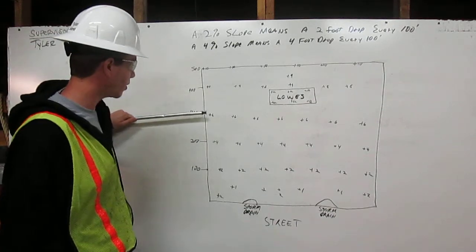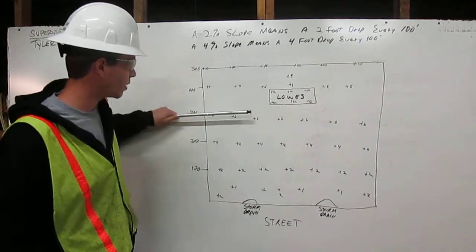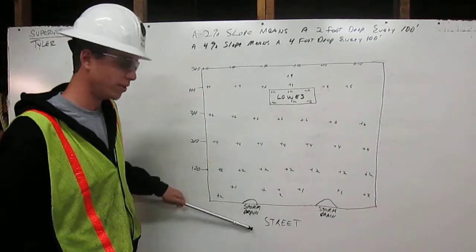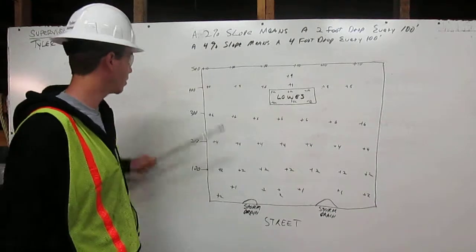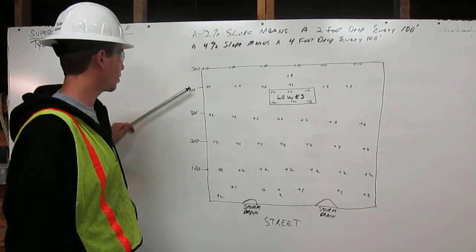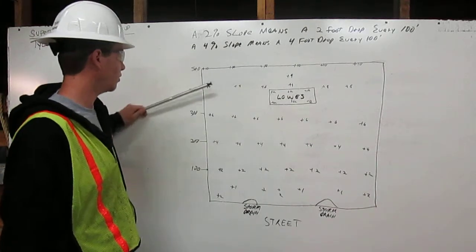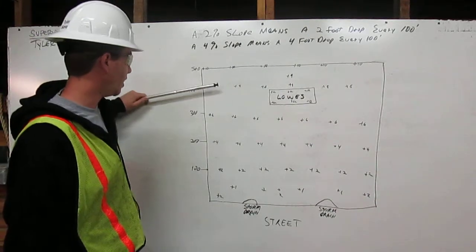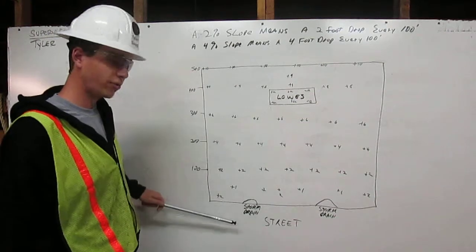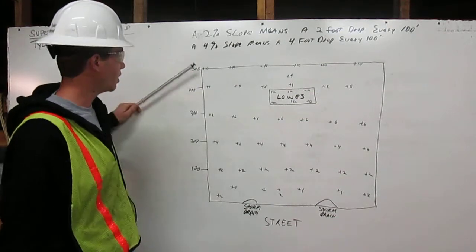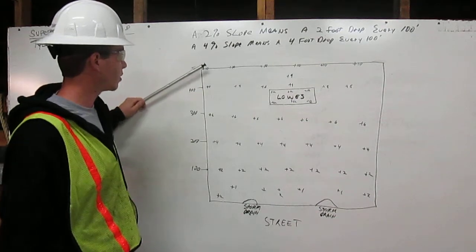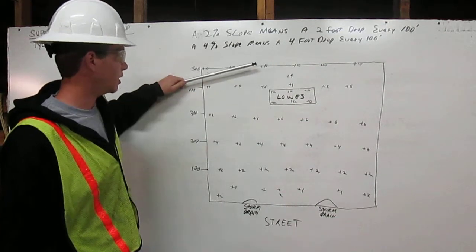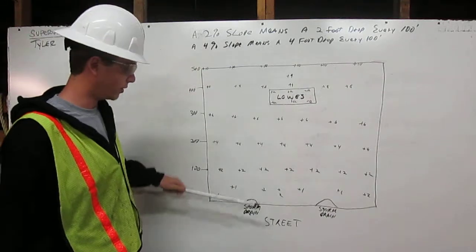At our 300 foot mark we are going to shoot our grade across and get it 6 feet higher than our street. At our 400 foot mark, shoot our grade across and get it 8 feet higher than our street. At our 500 mark, we're going to shoot our grade across and get it 10 feet higher than the street.